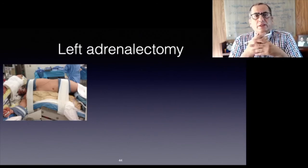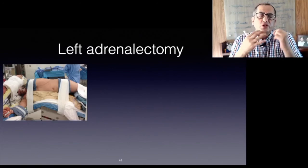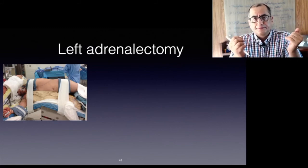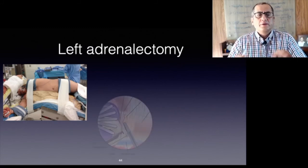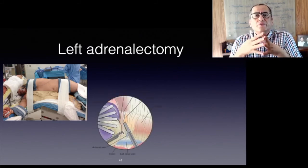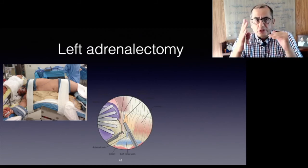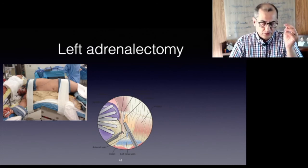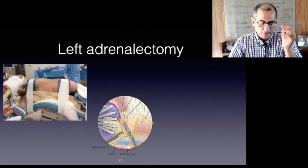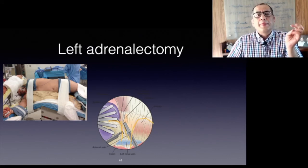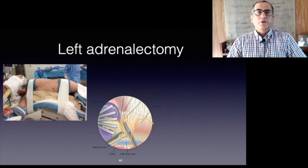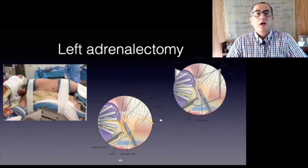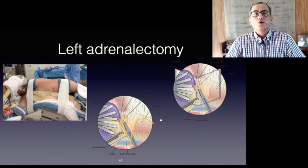For the left adrenal adrenalectomy, the position is the mirror image — the left side is up with the table broken. The incision of Gerota's fascia is made, followed by identification of the adrenal vein, which runs into the renal vein in the space between the medial aspect of the kidney and the posterior aspect of the pancreatic tail. The resection is completed by mobilizing the adrenal gland at the level of the periadrenal fat. The spleen and pancreatic tail are mobilized and retracted anteromedially to expose the adrenal gland.